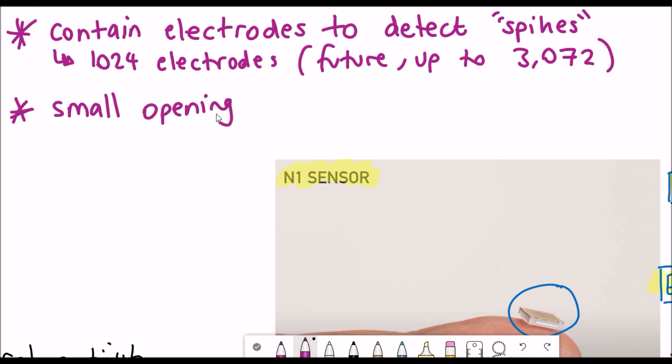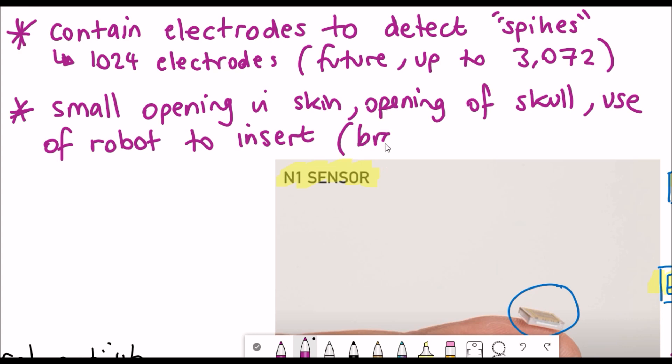Neuralink's goal is to make the procedure as simple and safe as possible and this means having no big scars and no long hospital stays. Their current plan is to use only a local anaesthetic whilst they make a small opening in the skin and then a painless opening in the skull.